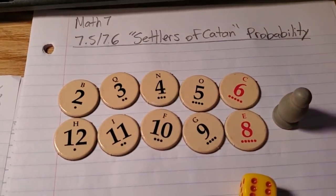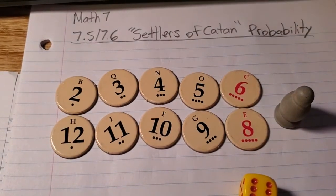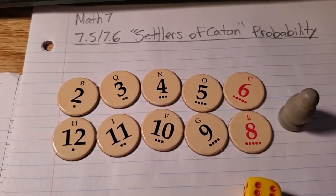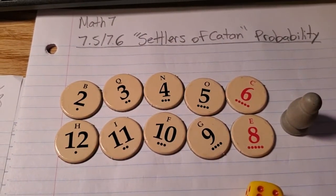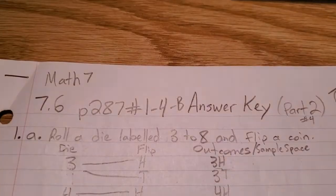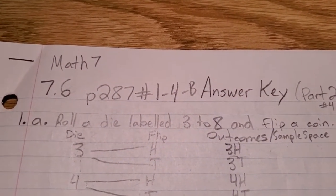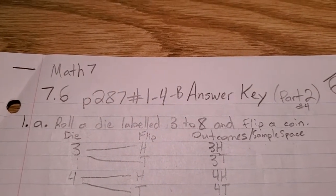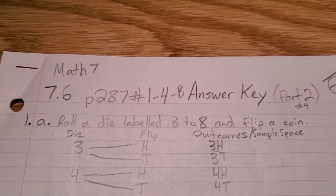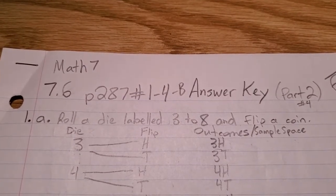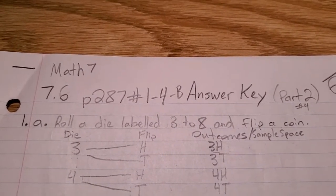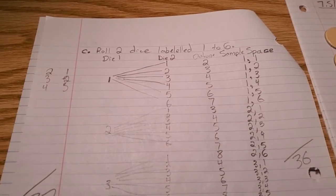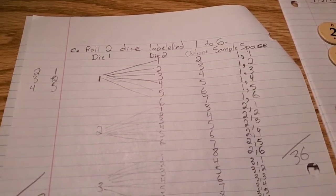Now, back on a previous lesson, it would have been 7.6, page 287, number one to four. On question 1c, you actually already made the tree diagram that can help you actually solve the theoretical probability of this happening, the theoretical probability of each number getting rolled.